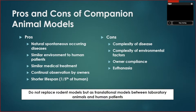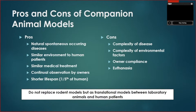The pros of using companion animals: these are spontaneously, naturally occurring diseases — not man-made in a laboratory. These animals live in the same environment as human patients, sharing the same environmental risks such as secondhand smoking, obesity, and lack of exercise. We use the same medications as in humans, so they have similar effects, side effects, and risks. These pets are constantly watched by their owners, who are well-tuned to changes in quality of life and behavior. And because cats and dogs live shorter lives than humans, we can shorten the duration of clinical trials.